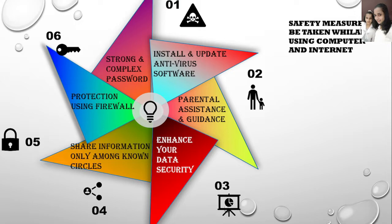Second is parental assistance and guidance. It is common practice to give mobile phones and other digital devices to children at a very young age, but this shouldn't be done. There should be strict parental guidance so that children are aware of hackers or malicious software when connected to the internet. Third, enhance your data security by always updating your antivirus and anti-malware detectors, which helps maintain a healthy system.